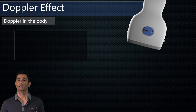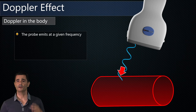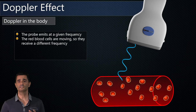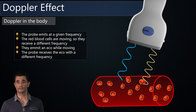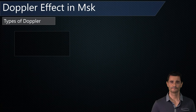And how does it work in the body? We need an emitter — the probe — which will also be the receiver of the ultrasound, because it needs to analyze the sound. The probe emits a frequency that hits a vessel. The vessel has inside erythrocytes — blood cells — which are moving. These red blood cells receive a different frequency because they are moving. They then emit an echo, and because they are moving, the frequency of the echo will also be different. This echo is analyzed and received by the probe. So the frequency emitted will be different from the frequency received, and it depends on the movement of the flow inside the vessel. This is the Doppler effect inside the body.